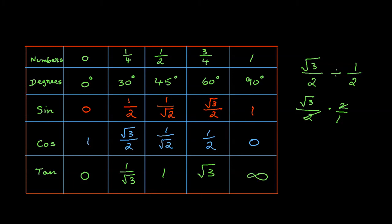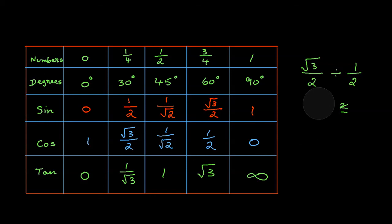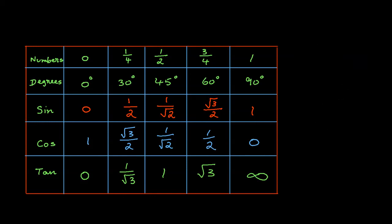This is exactly how you find the values for 0 degrees, 30 degrees, 45 degrees, 60 degrees, and 90 degrees for sine, cosine, and tangent. Thank you for watching.